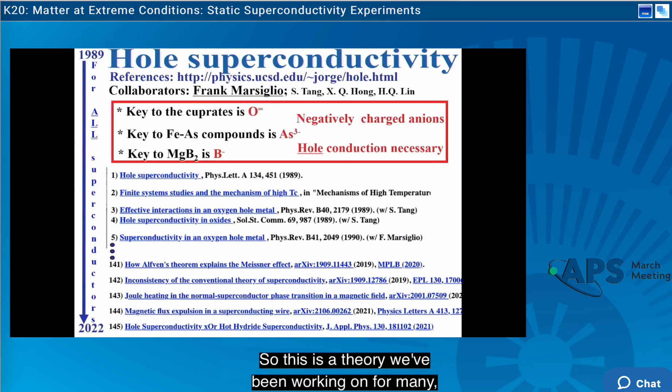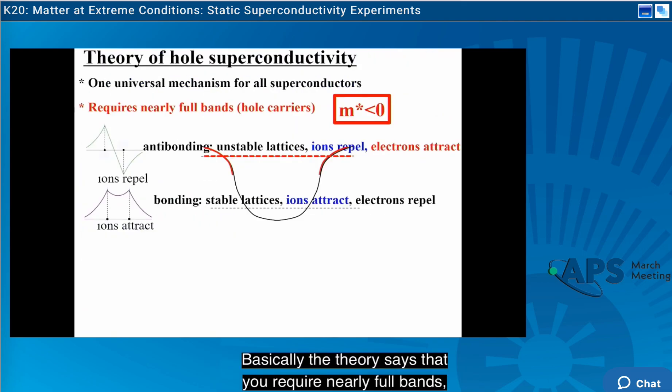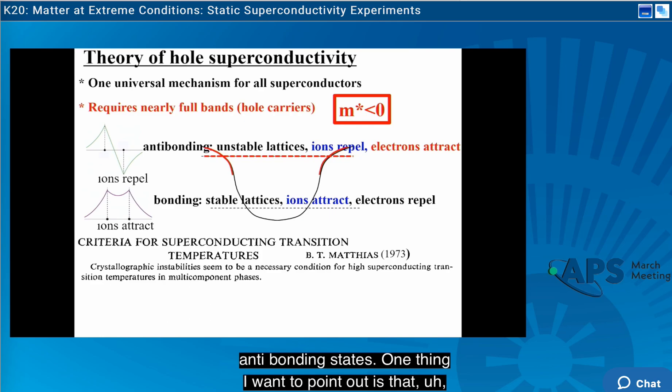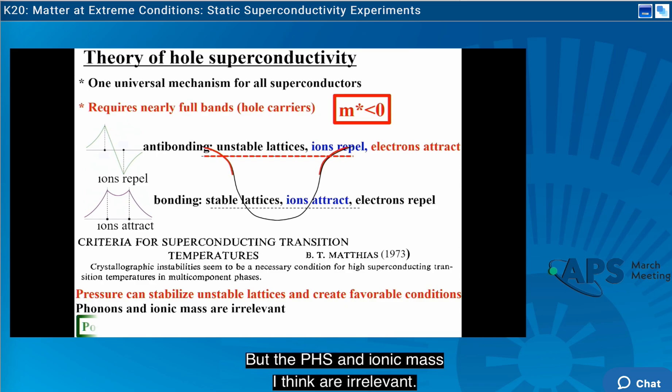So this is a theory we have been working on for many years. And basically, it's orthogonal to electron phonon theory. The phonons have nothing to do with superconductivity. We have written a lot of papers that I cannot go over. Basically, the theory says that you require nearly full bands, anti-bonding states. One thing I want to point out is that Matthias pointed out long ago that crystallographic instability seems to be a necessary condition for high-TC superconductivity, which is what you get when you have anti-bonding states and unstable lattices. So pressure can stabilize unstable lattices and create favorable conditions. That's why high pressure is a promising route for high-temperature superconductors. But the phonons and the ionic mass, I think, are irrelevant. You need to look for positive hole coefficients.